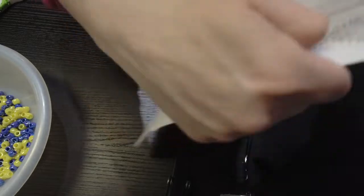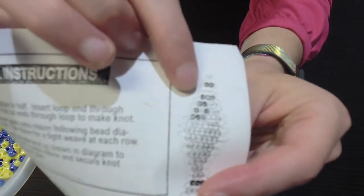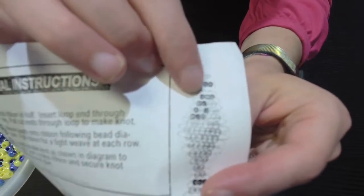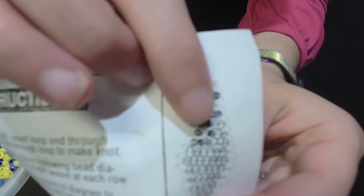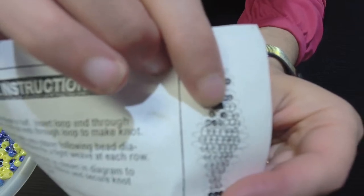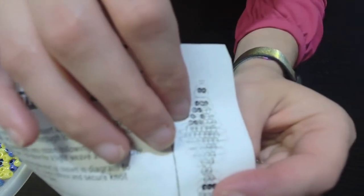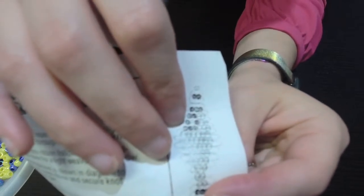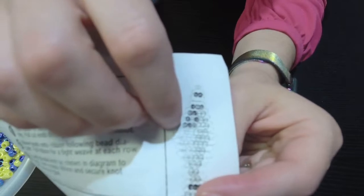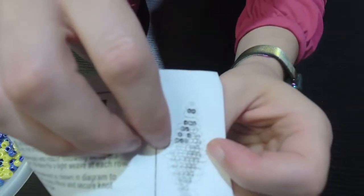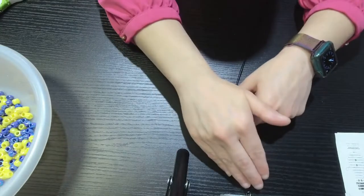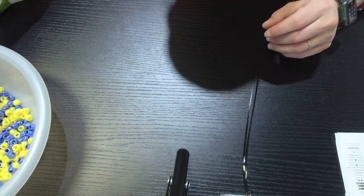From here, we're going to start working on our pattern. As you can see, the first line is two. And each line is going to show you how many beads, and for the first few rows you want to be mindful of the colors. The dark one's going to be the blue, and the clear ones, the empty circles, are the yellow. You could choose any color you want. So we're going to start with two dark ones, two blue ones.